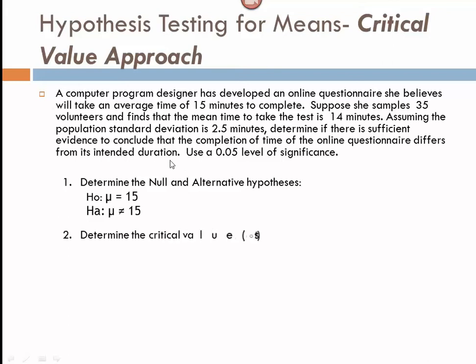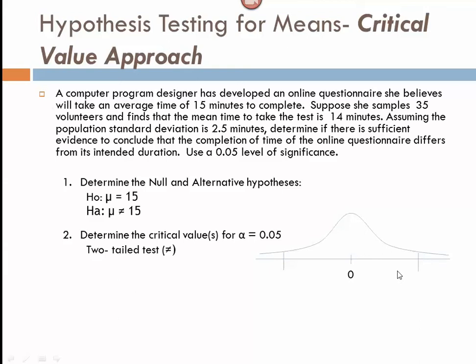We determine the critical values for an alpha level of 0.05. This is a two-tailed test because of the not-equal-to symbol, so we have two critical values. For a 0.05 significance level, the critical values are positive and negative 1.96. We go ahead and write those on our graph.